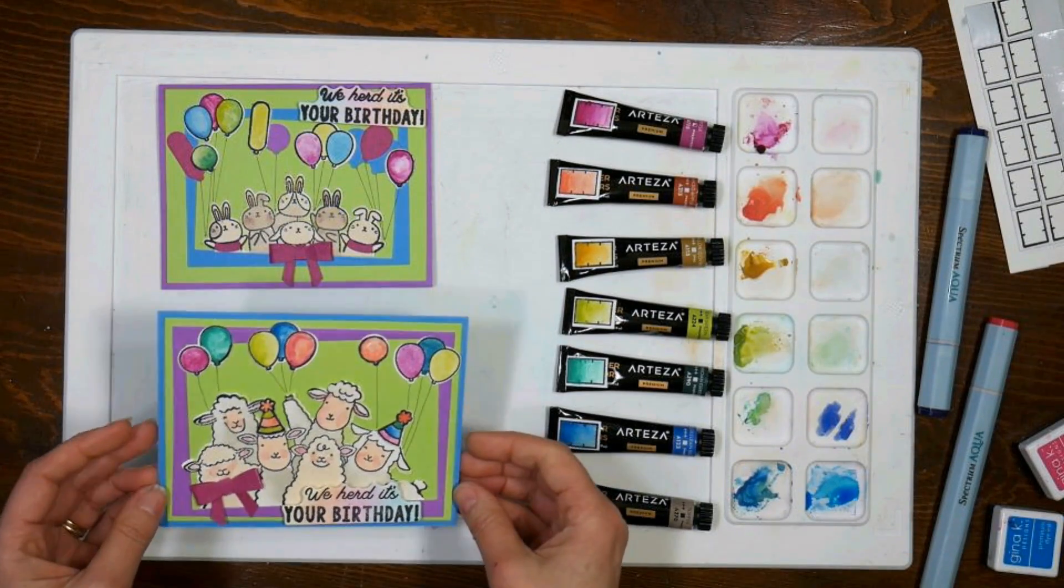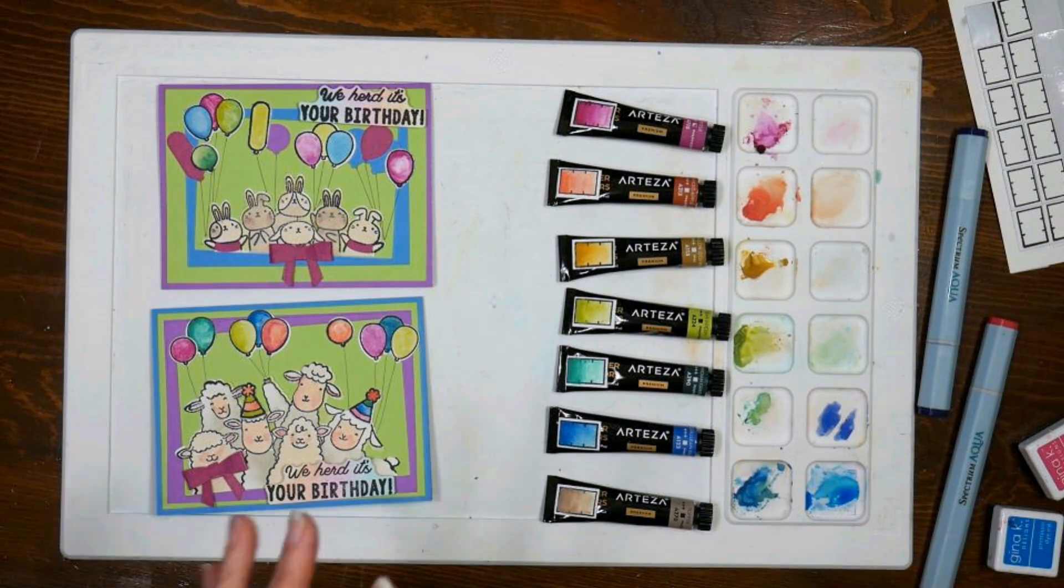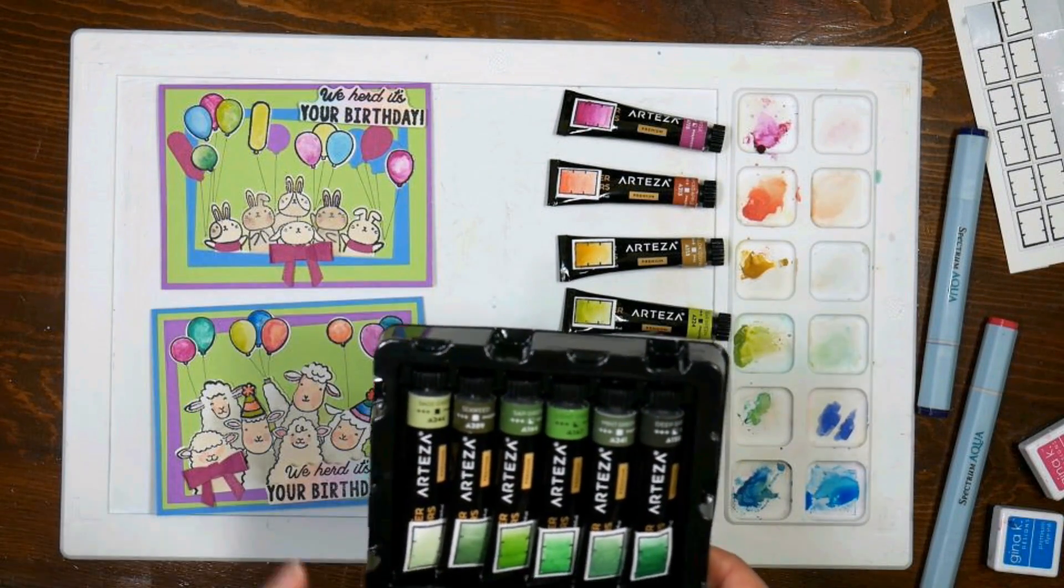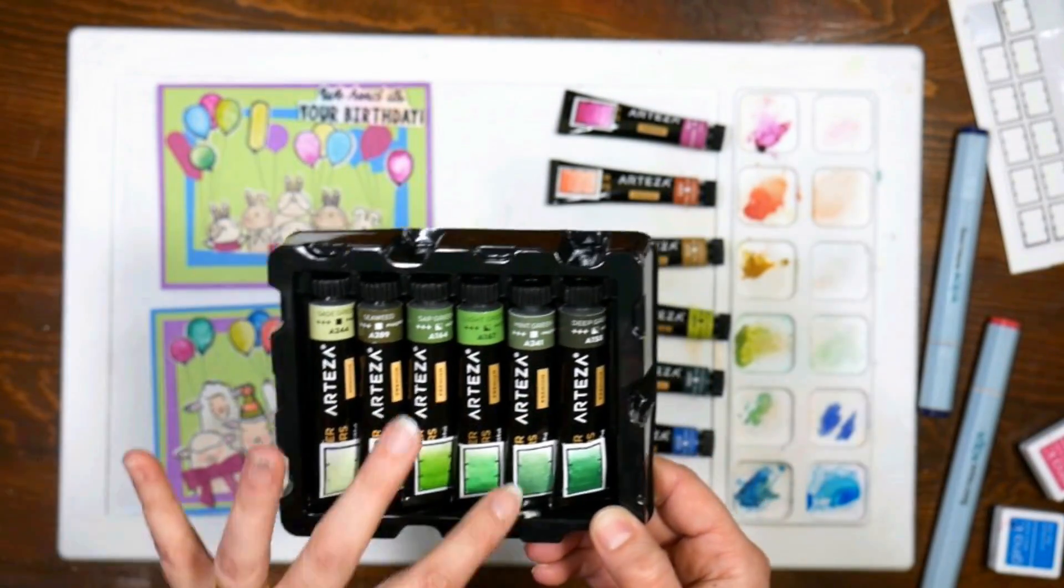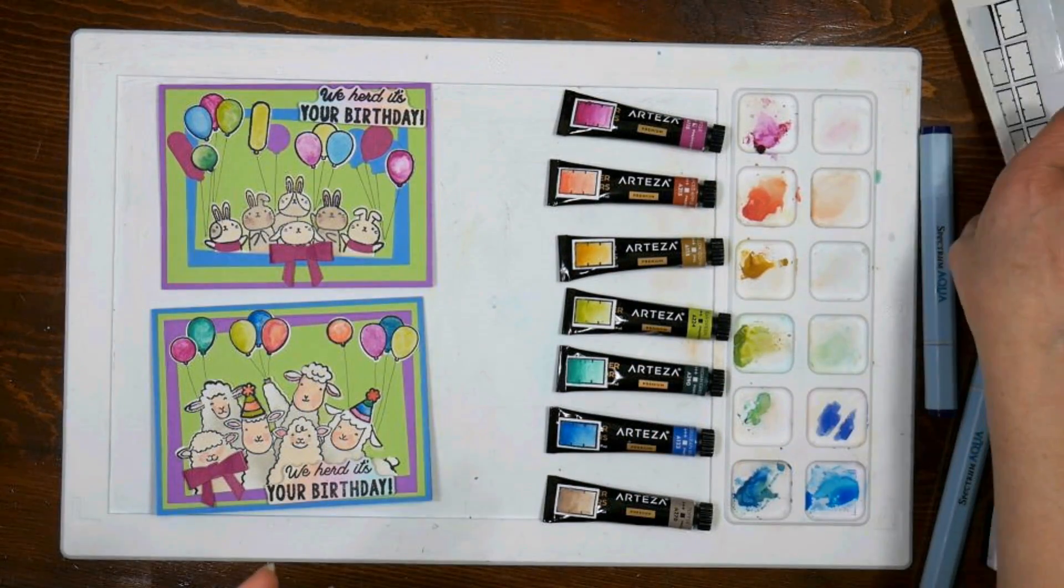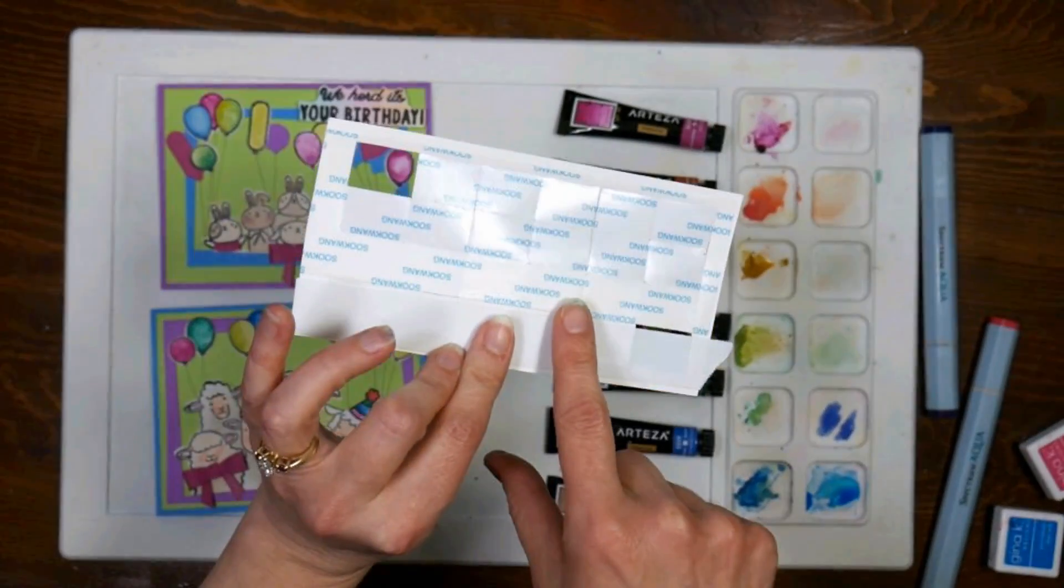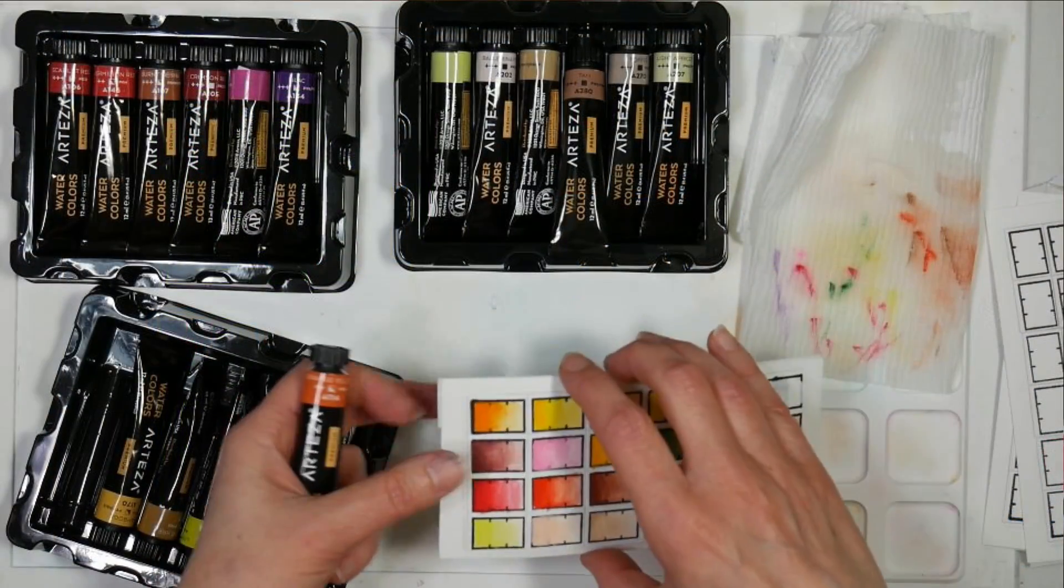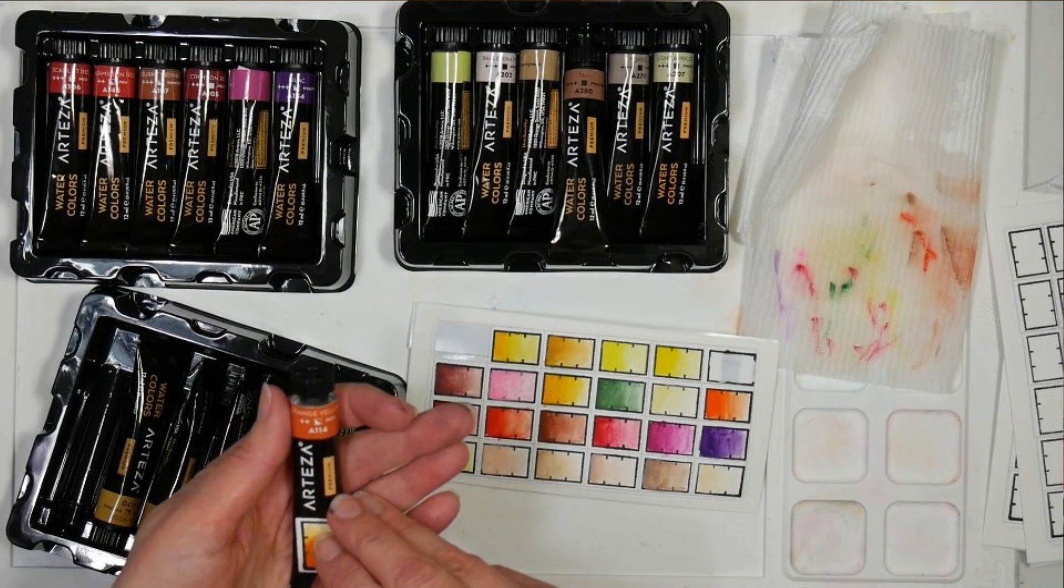When you swatch your materials you can see what they really look like because they look different than they do in the pans with watercolors. I'd just gotten this set of 60 watercolors from Arteza and I was swatching them. I realized that the colors on the tubes don't really match what's in the tubes, so I wanted to swatch them in a way that I could actually put the colors on the tubes. I stamped my swatching stamp from Waffle Flower on watercolor paper, put some score tape on the back, ran it through my die cutter with the coordinating dies, and I made these little stickers.